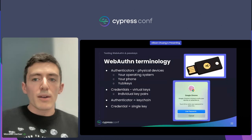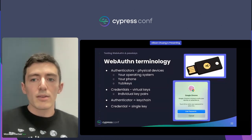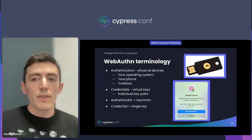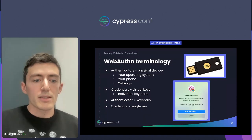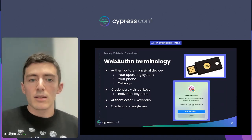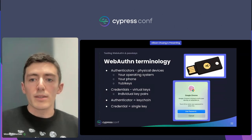Let's talk about some basic WebAuthn terminology. Authenticators are physical devices that validate your identity — for example, your operating system, your phone, or a YubiKey. Credentials are virtual private keys stored on the authenticators, registered to the server and linked to your online account.